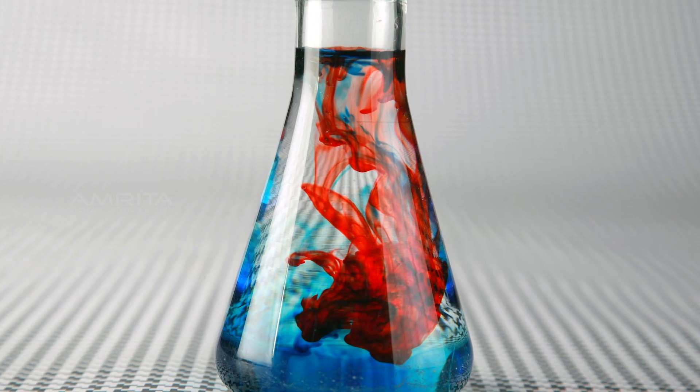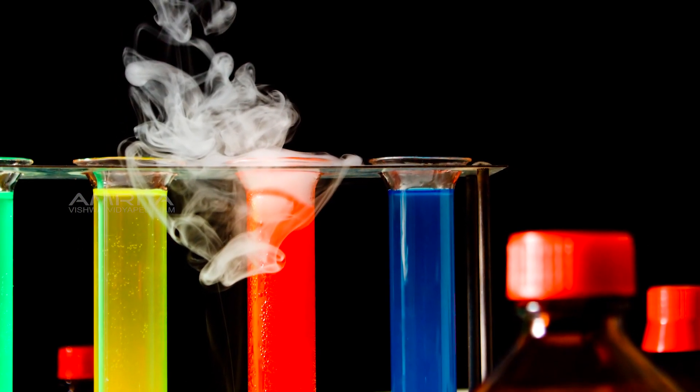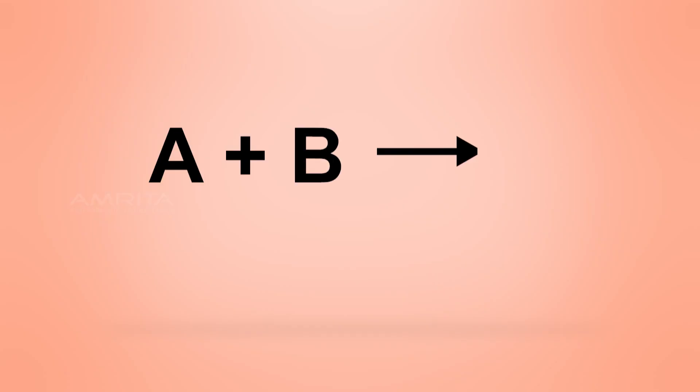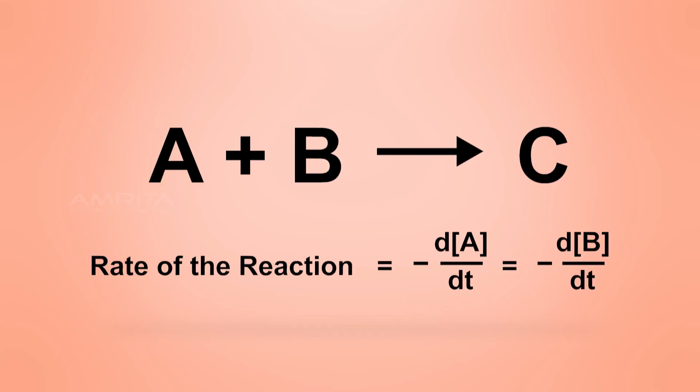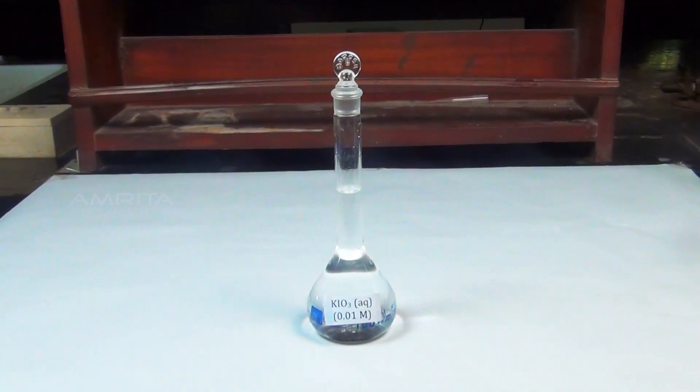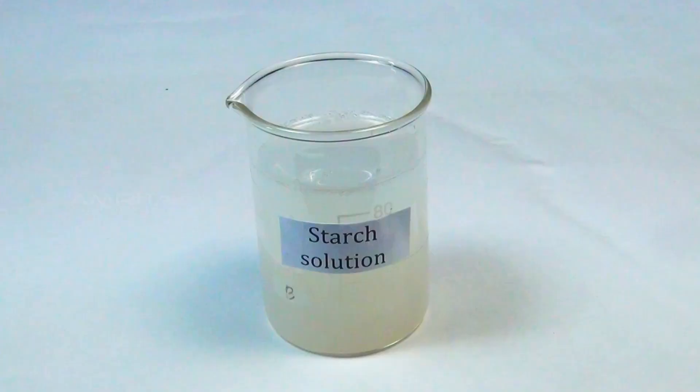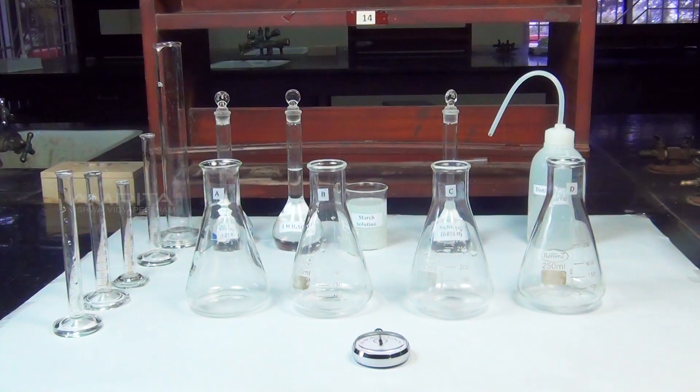The rate of a chemical reaction may depend on the concentration of one or more reactants. The effect of concentration of the reactant on the rate of a chemical reaction can be studied by the reaction between potassium iodate and sodium sulphite in the presence of starch indicator at room temperature and pressure.